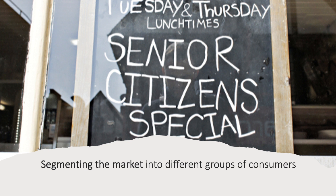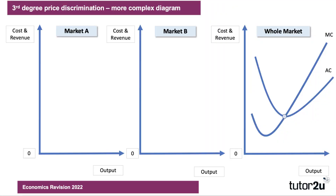Essentially, third degree discrimination involves segmenting the market. Think of a chocolate orange and all the lovely little segments in there — smash it on the desk and you can segment the orange. Third degree discrimination is a little bit like that because essentially you're trying to segment the market into different identifiable groups of consumers. Here's my slightly more complex diagram where the whole market can be split into market A and market B.